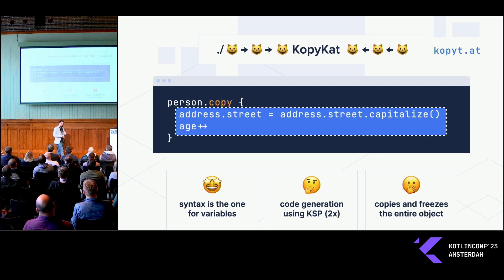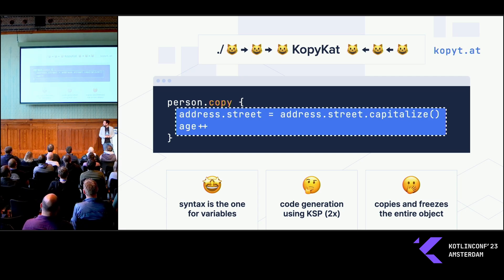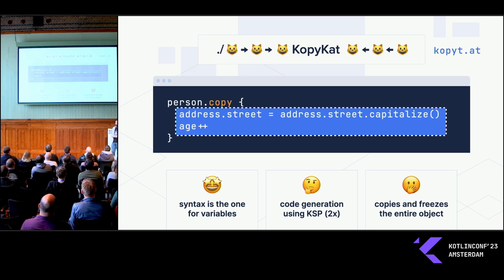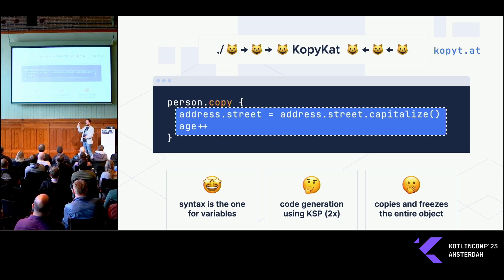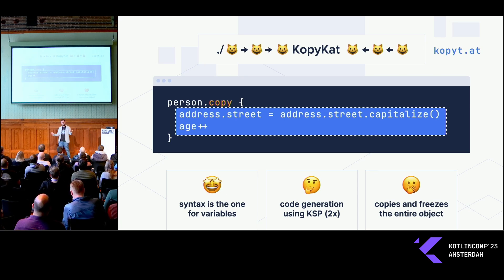It does some not-so-great things. In order to have this right now, we need code generation, and this is done using KSP. So it roughly doubles the size of your data classes because it's essentially creating mutable versions which it uses under the hood.